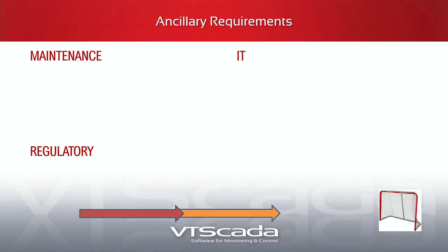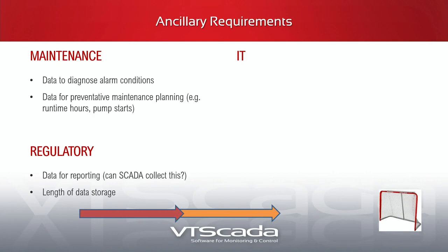There are additional requirement categories: maintenance data to diagnose alarm conditions — your trending information and ancillary data showing values that affect the process around the one you're looking at. You'd want the ability to trend values associated in groups. For preventive maintenance: runtime hours, pump starts. If we can use that information to generate low-priority warnings when something needs maintenance, that's helpful — and we already have that information in the system.